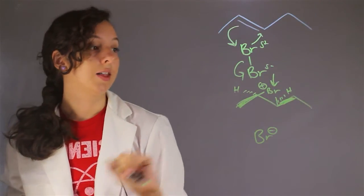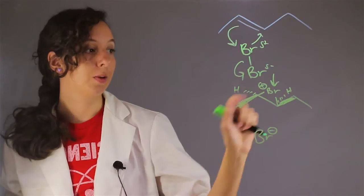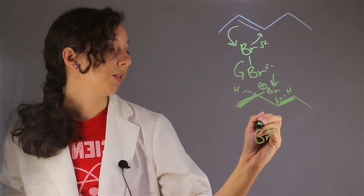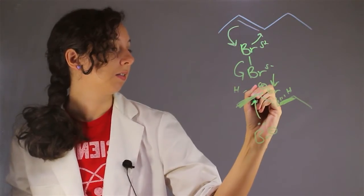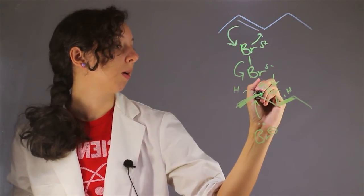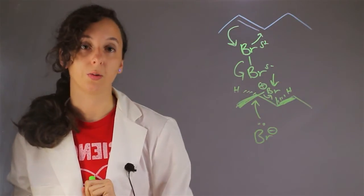So this is not very stable because we have a full positive charge on bromine. And so this negatively charged bromine finds it, attacks in, and then this bond goes completely to this positively charged bromine.